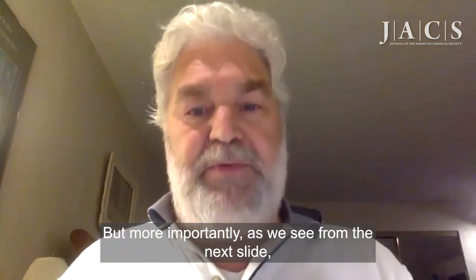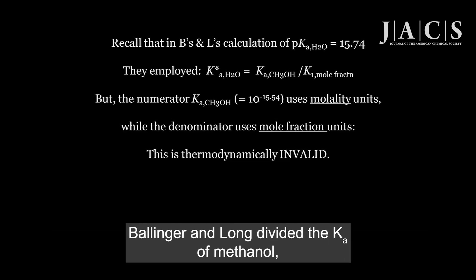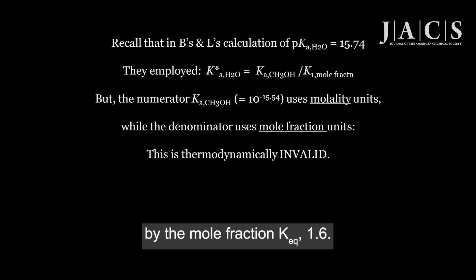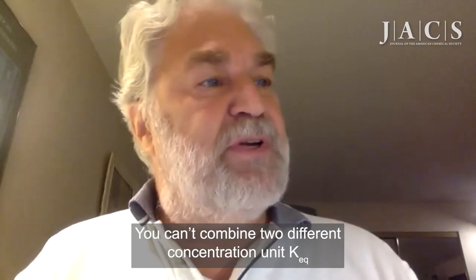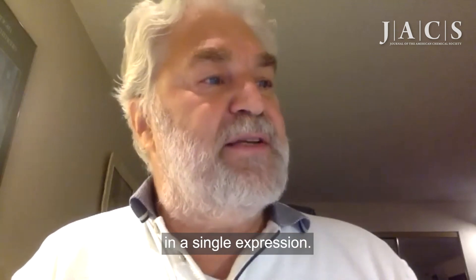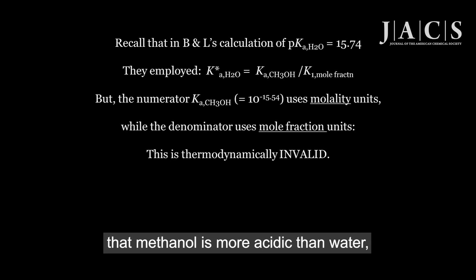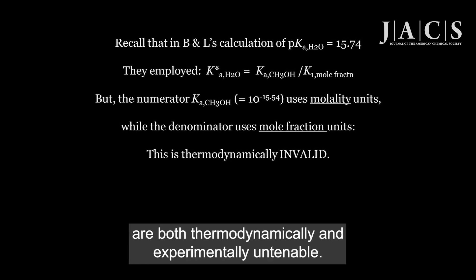We see in the next slide that Ballinger and Long converted their Keq of 0.029 to mole fraction units. And using this mole fraction Keq of 1.6, Ballinger and Long then concluded that methanol is 60% more acidic than water. Using their pKa of 15.5 for methanol, they then calculated a pKa star of water of 15.7. The problem is that their Keq of 0.029 for the methanol-hydroxide equilibrium showed definitively that water is a stronger acid than methanol. And this supports the 14.0 pKa for water and not the 15.7 value. But more importantly, in order to calculate the 15.7 pKa value, Ballinger and Long divided the Keq of methanol, which employs molality concentration units, by the mole fraction Keq of 1.6. This is thermodynamically invalid — you can't combine two different concentration unit Keqs in a single expression. So Ballinger and Long's conclusion that methanol is more acidic than water, as well as their pKa star value of 15.7, are both thermodynamically and experimentally untenable.